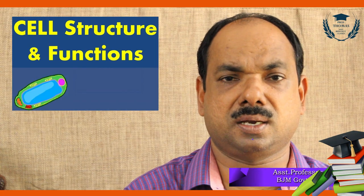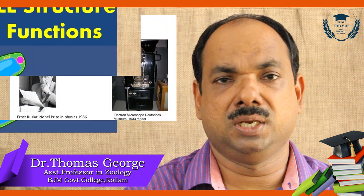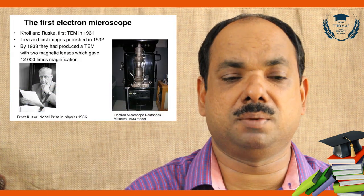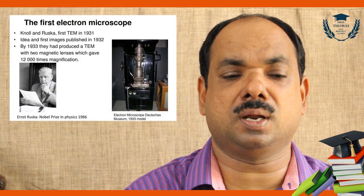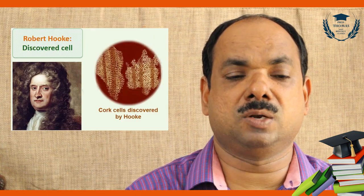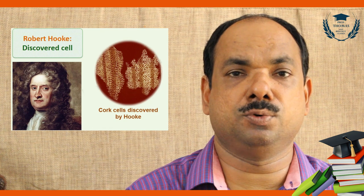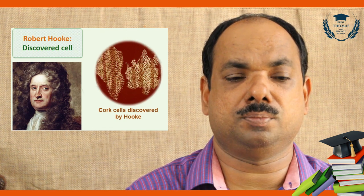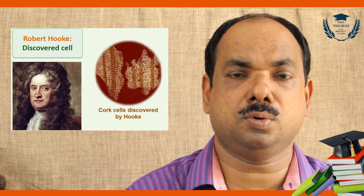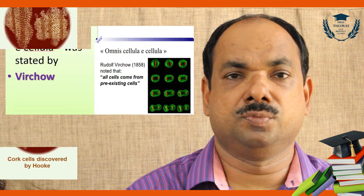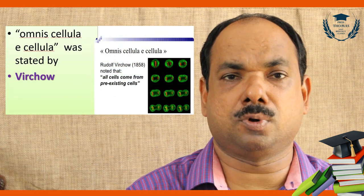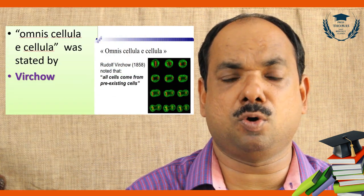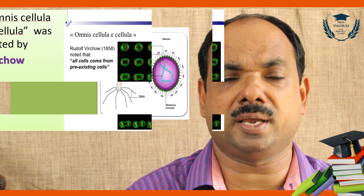Cell Structure and Function: The electron microscope was discovered by Knoll and Ruska. The term 'cell' was first used by Robert Hooke. Robert Hooke used the term cell, and Virchow's contribution to cell theory is 'Omnis cellula e cellula.'